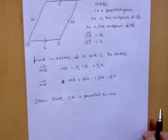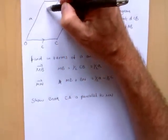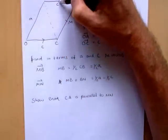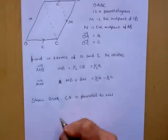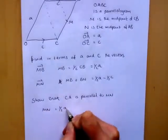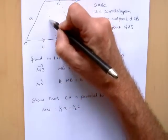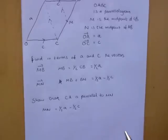So on to the second bit, we've got to show that C to A is parallel to M to N. We know that M to N is half a minus half c. Providing they're going in exactly the same direction, then we know that they are parallel.